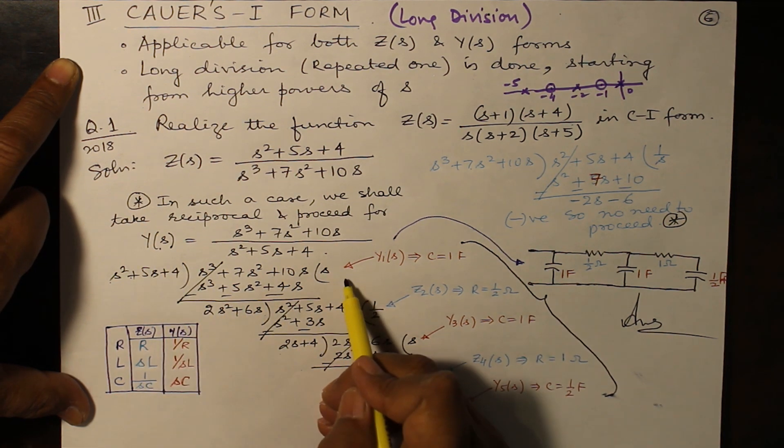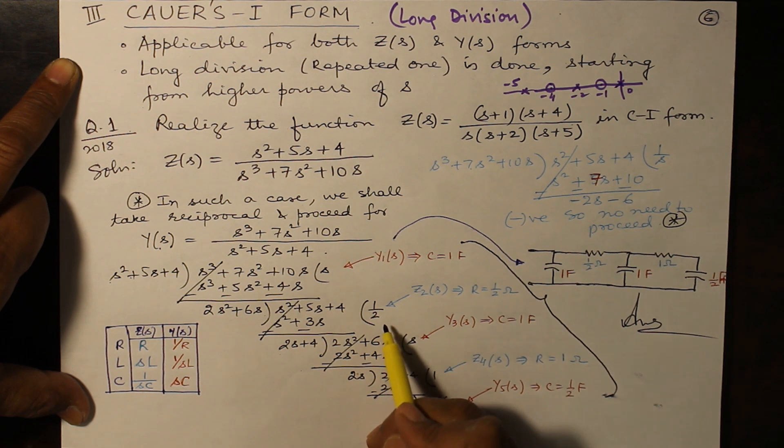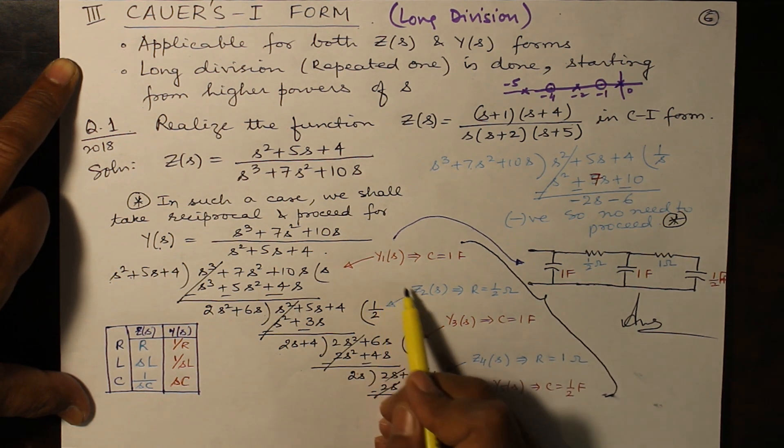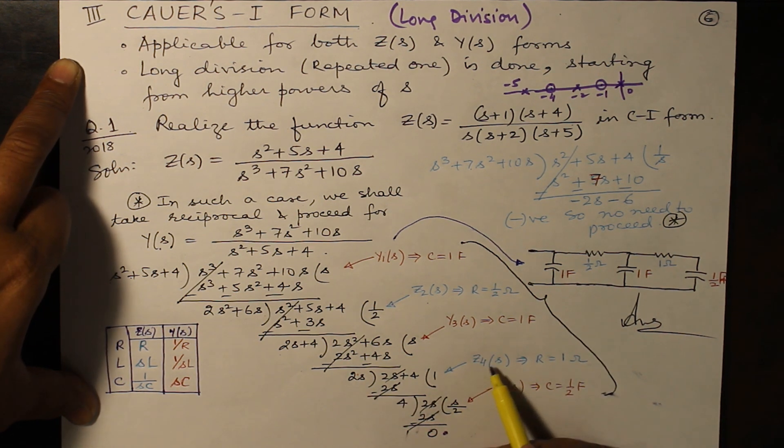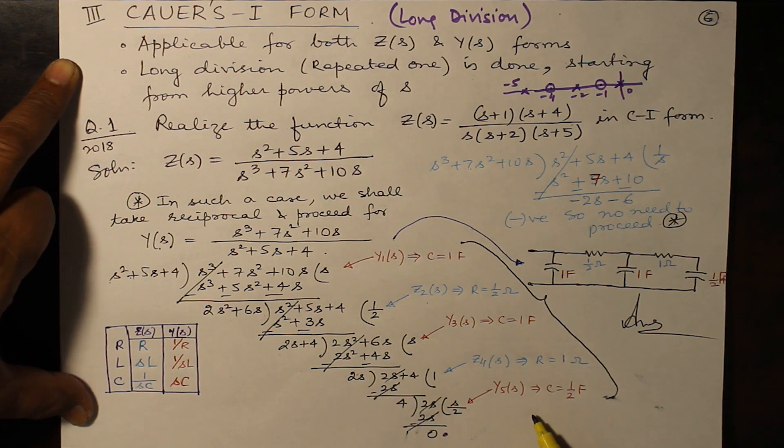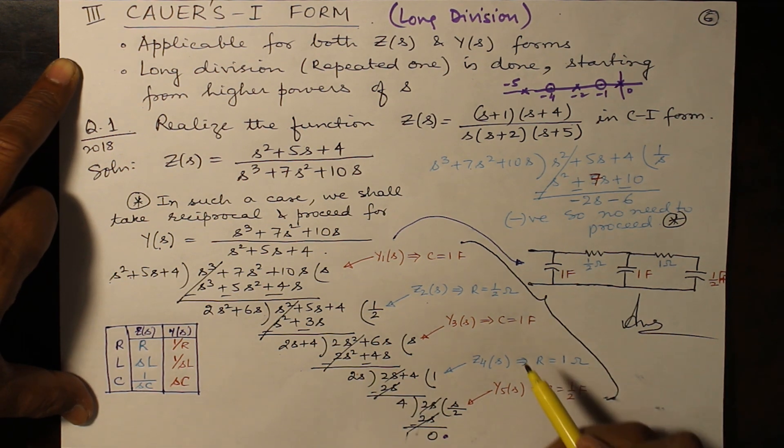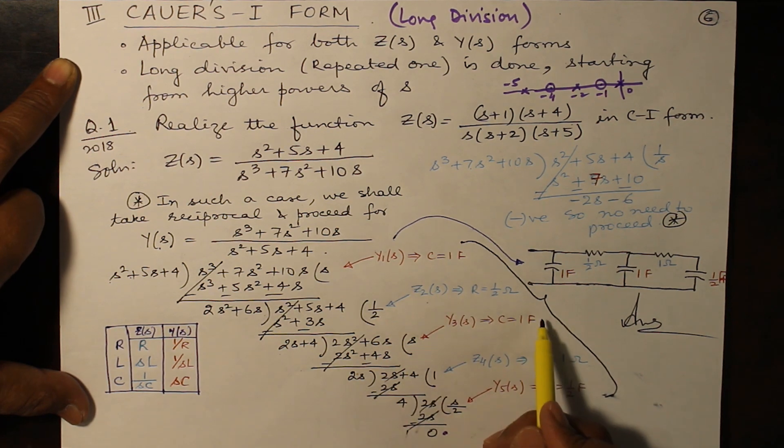Then first term will correspond to Y1(s), second term - alternate terms - second term Z2(s), third term Y3(s), fourth term Z4(s), fifth term Y5(s) and so on. And in the ladder you are going to step down the ladder in this way.